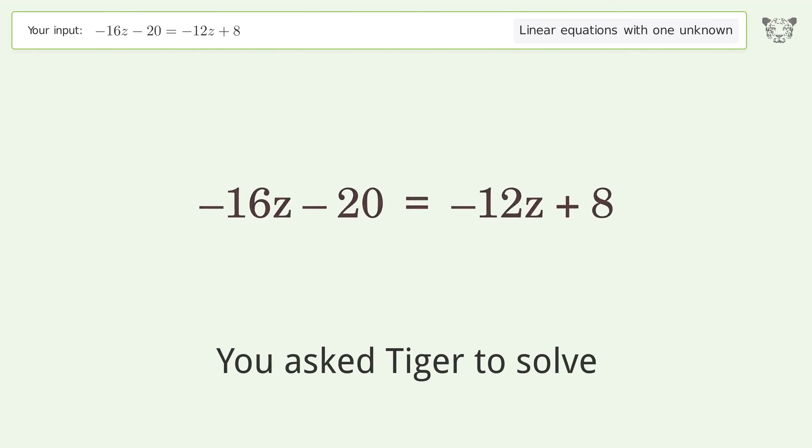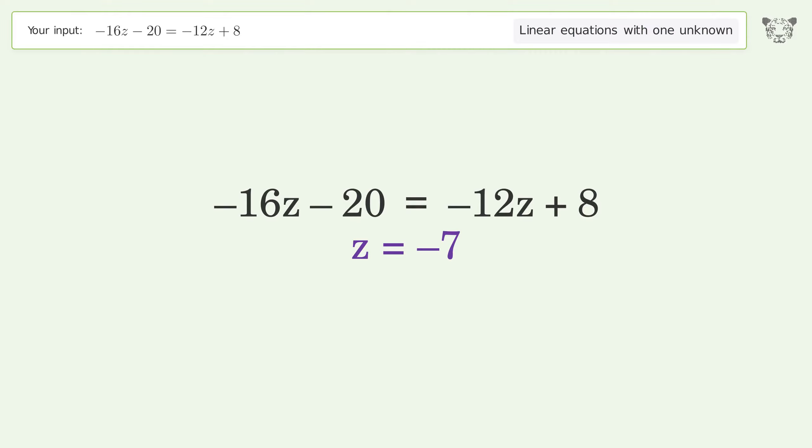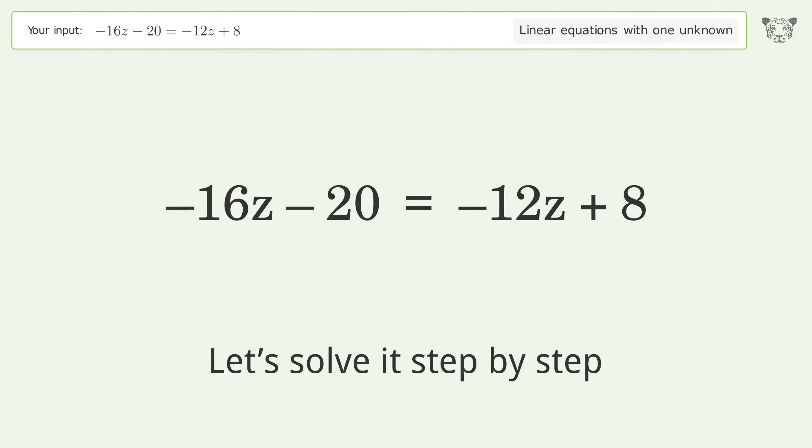You asked Tiger to solve. This deals with linear equations with one unknown. The final result is z equals negative 7. Let's solve it step by step.